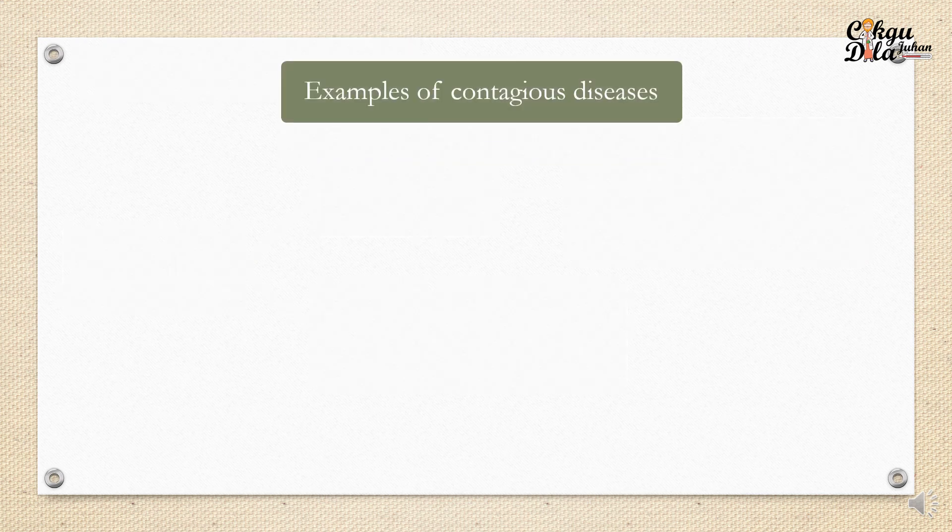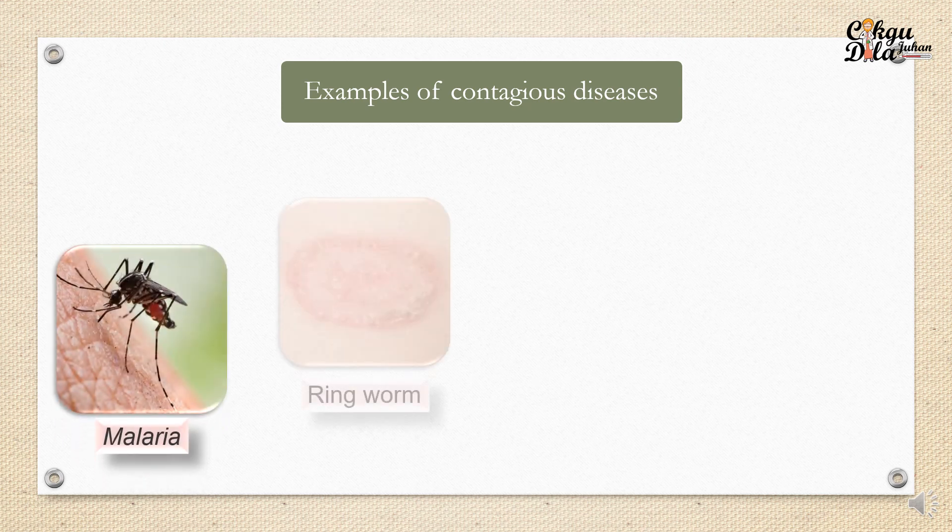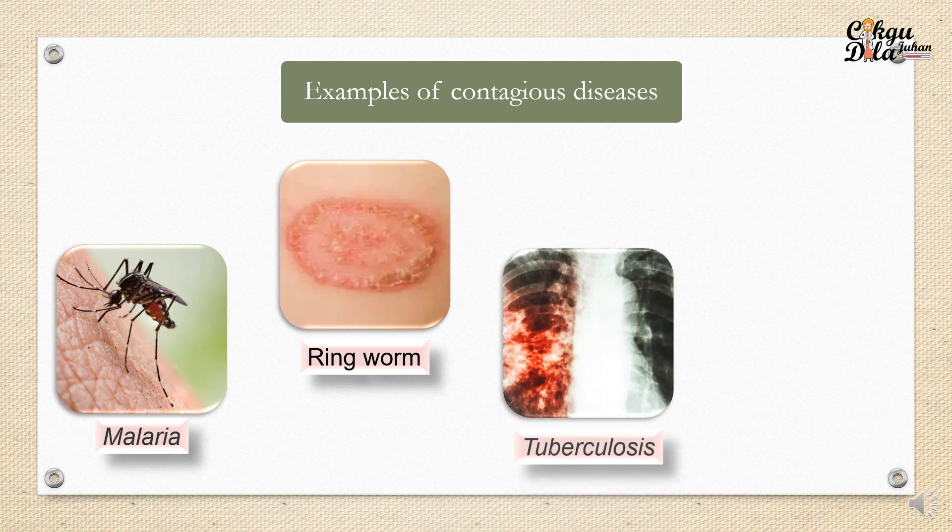These are some examples of contagious diseases, for example malaria, ringworm, tuberculosis, and conjunctivitis.